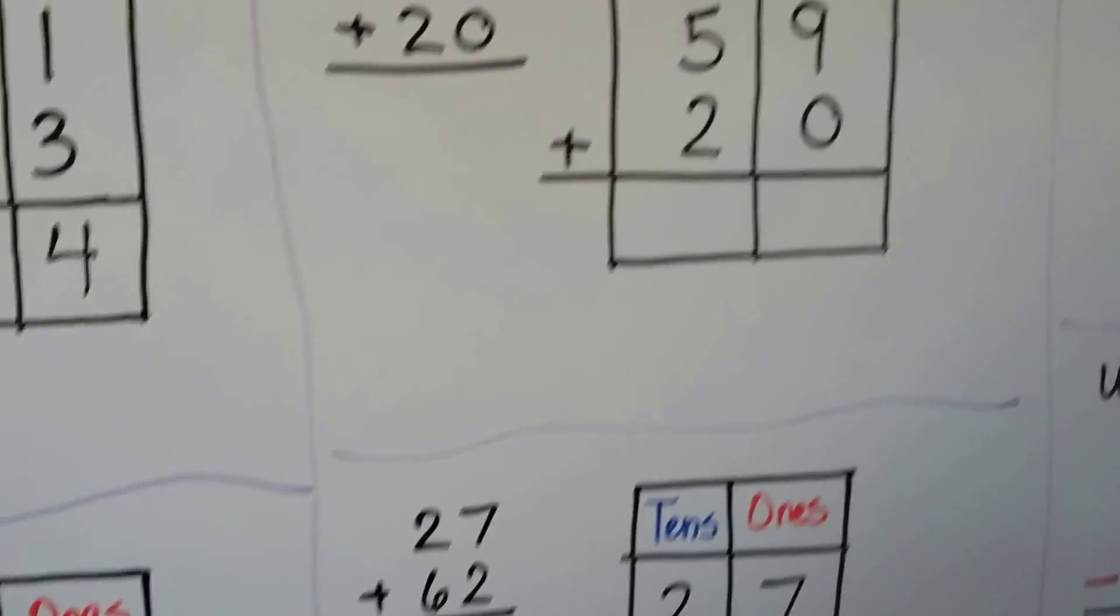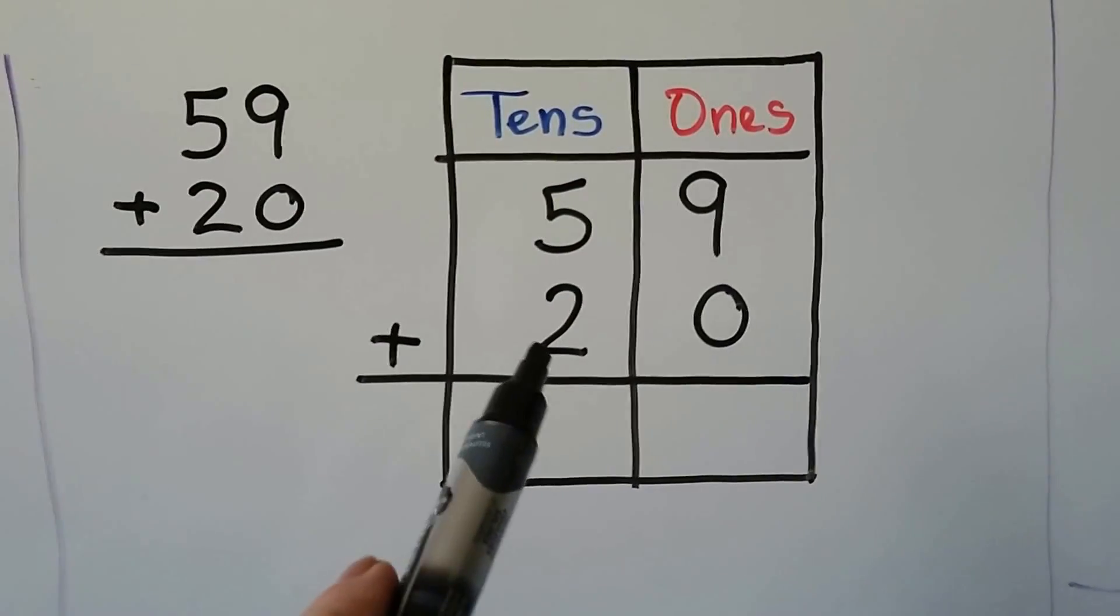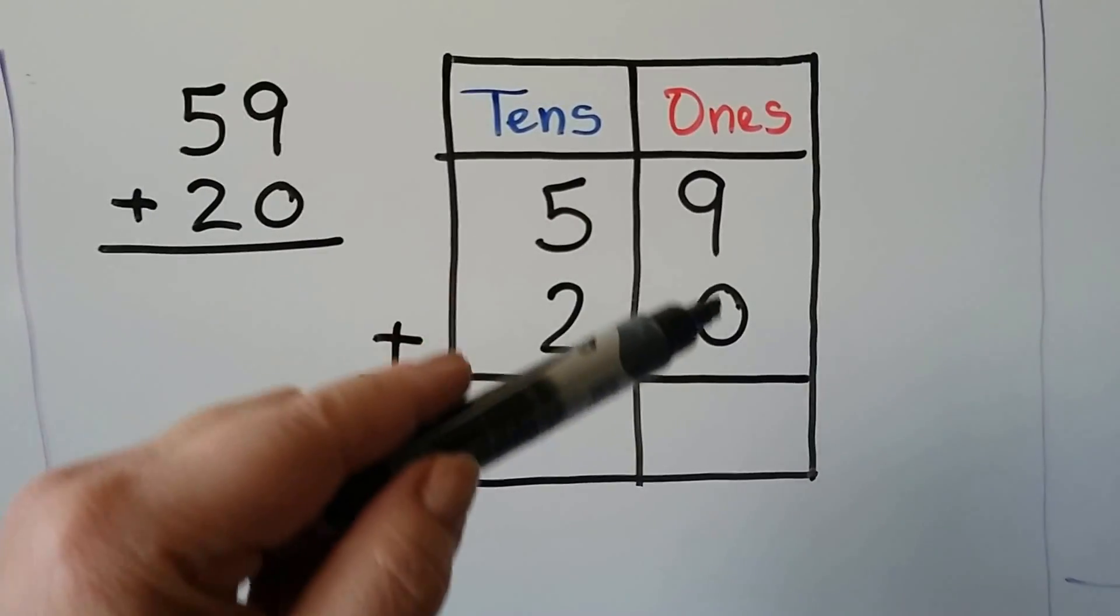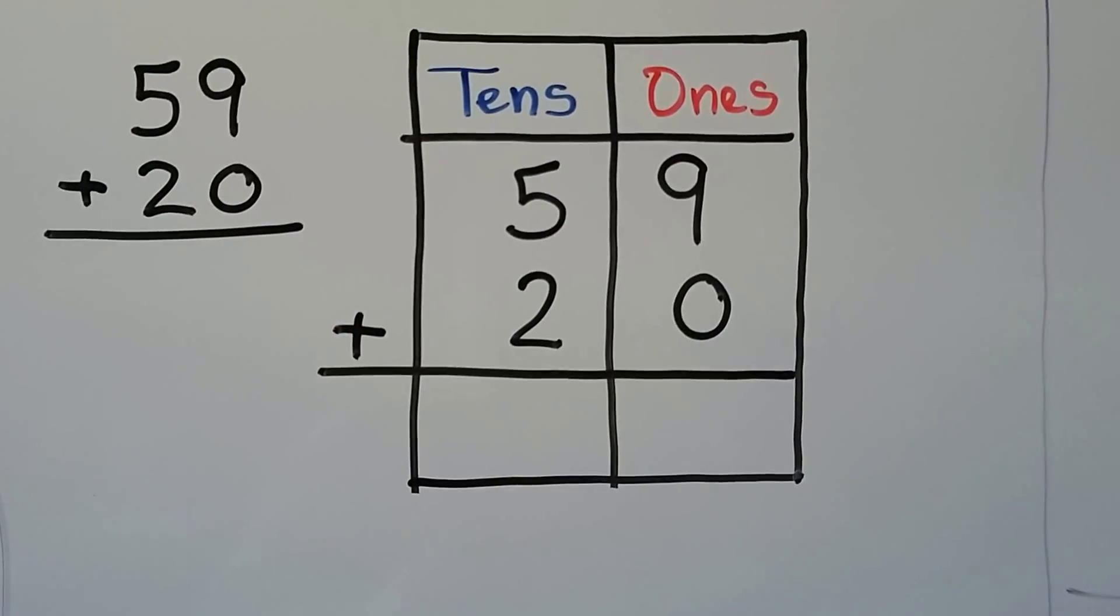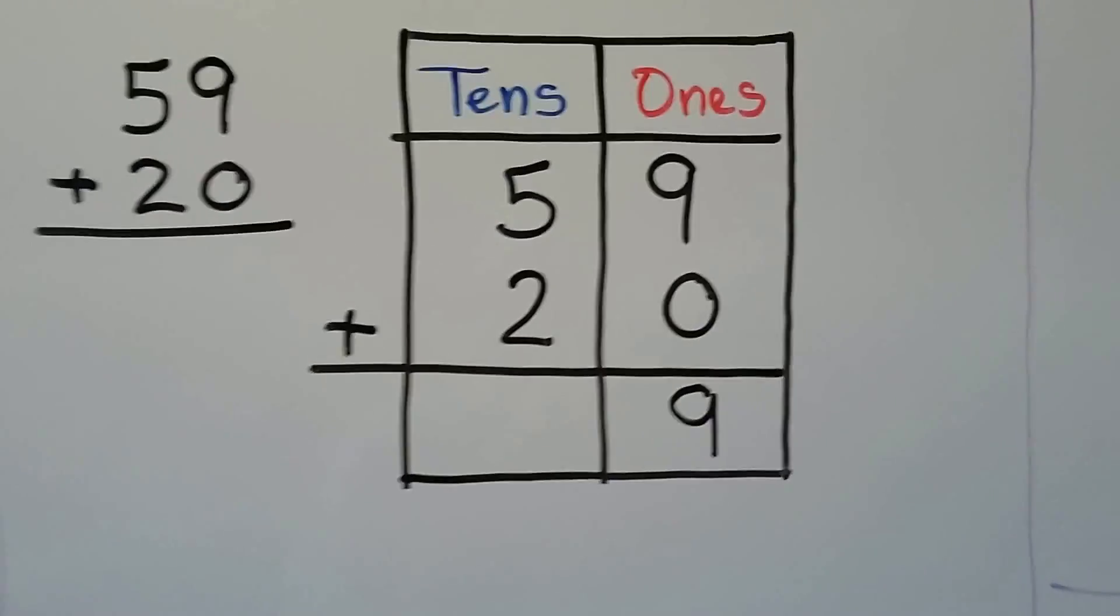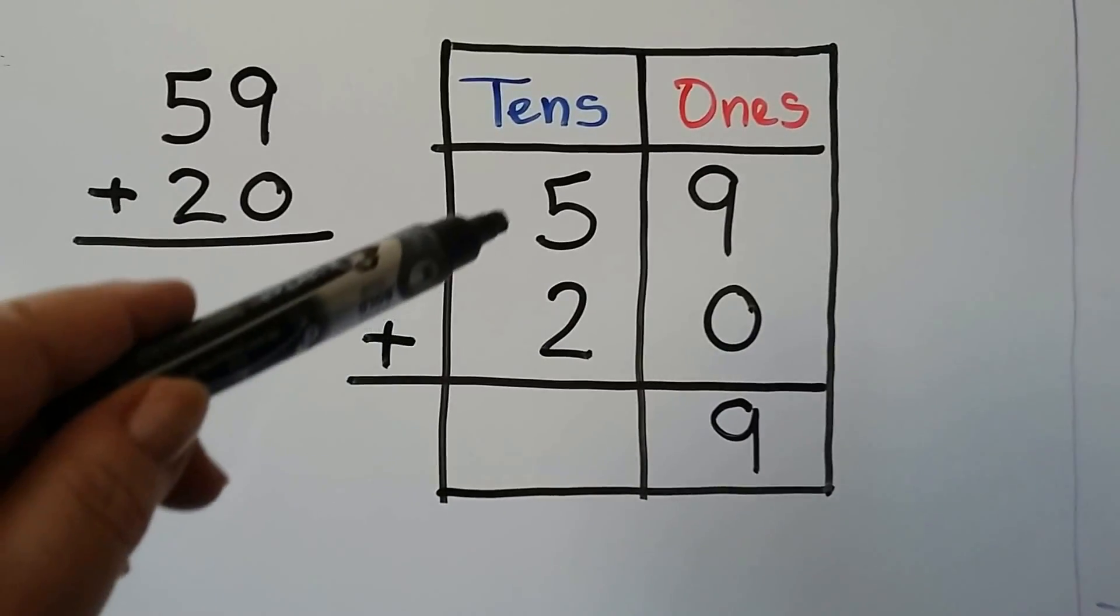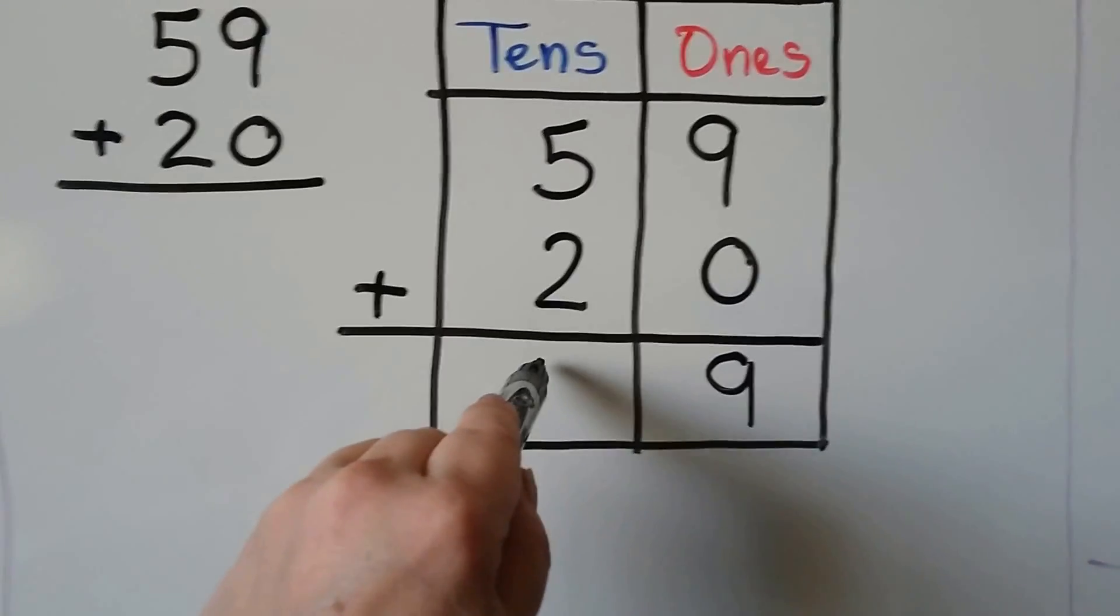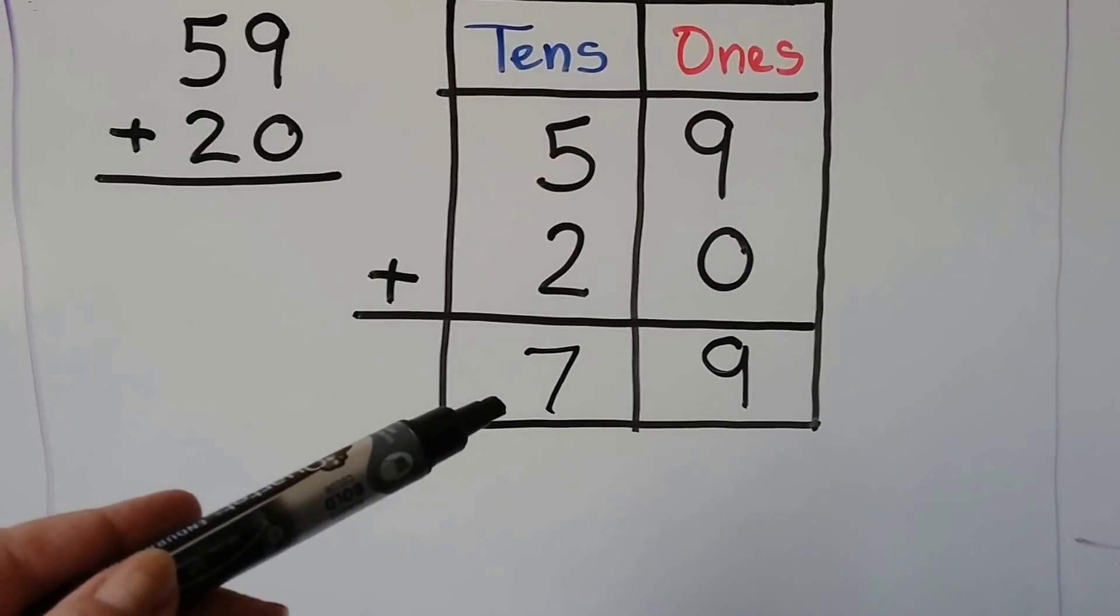Let's try another one. We have 59 plus 20. We have 5 tens and 9 ones plus 2 tens and 0 ones. We start with the ones place first and we add 9 plus 0. And you remember whenever we add 0 to a number, the number stays the same. So the 9 is going to stay the same and we're going to have a 9 in the ones place. In the tens place, we have a 5 plus a 2. We can start with the 5 and count on 2: 5, 6, 7. That means 59 plus 20 is equal to 79.